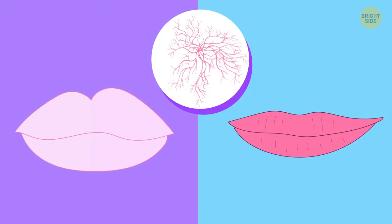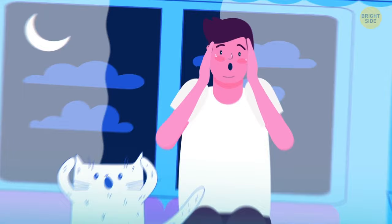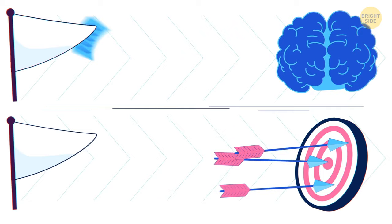Your ears produce more earwax when you're afraid. Boy, I must be terrified. Information travels to and from the brain going 270 miles per hour, faster than an arrow.